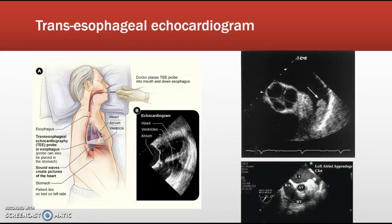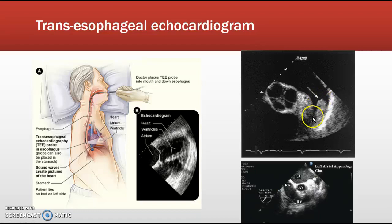This slide shows visual pictures of the TEE procedure. The patient is placed under conscious sedation and an ultrasound probe is passed down the esophagus, allowing an unobstructed view of the chambers of the heart. On the right side of the picture is a clot in the left atrial appendage — you can see the left atrium and the solid white area is the clot. The left atrial appendage is a common site for clot formation.